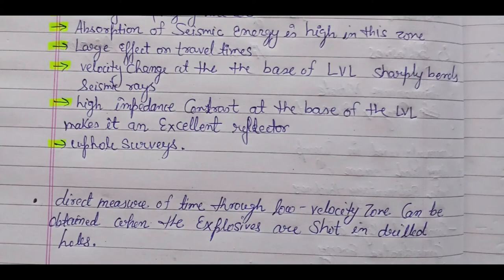Another important advantage is that there is a direct measure of time through the low velocity zone. From this time measurement, we can determine the thickness of the LVL and eliminate its effect on travel times. A direct measure of time through the low velocity zone can be obtained when the explosive is shot in drill holes.